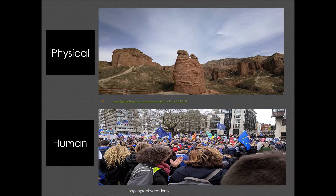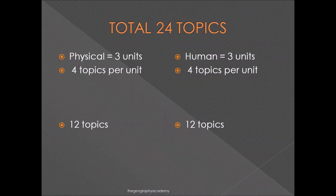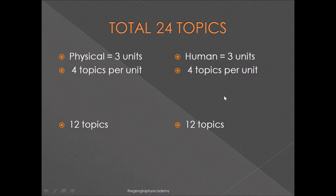The course is split into two sections: one is physical and one is human. In total you're going to have three units in physical, three units in human, and for each of those units they have four topics. This means in total you will be studying 12 topics in physical geography and 12 in human geography. Those topics are what you'll be given in the exams, split into two separate papers — one for human geography and one for physical geography.